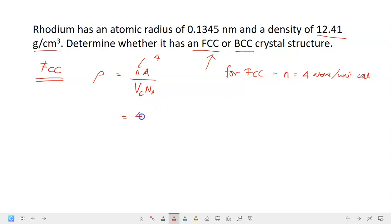So we have 4 here, atoms per unit cell times A, the atomic weight of rhodium. You can check in the periodic table or you can google. The value is 102.9 gram per mole divided by Vc.